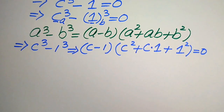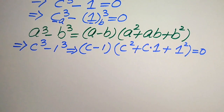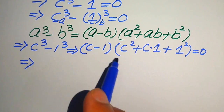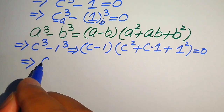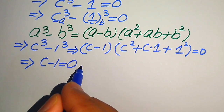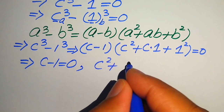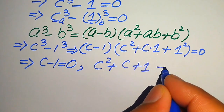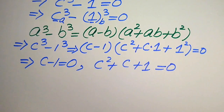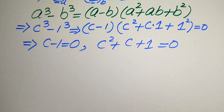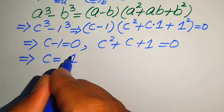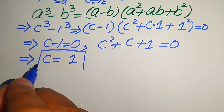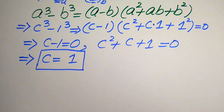This cubic formula implies that we divide this equation into two cases. The first case is c minus 1 equals to 0, and the second case is c squared plus c plus 1 equals to 0. From the first case, we move minus 1 to the right hand side and we easily get c equals to 1. This is our first solution of the given equation.